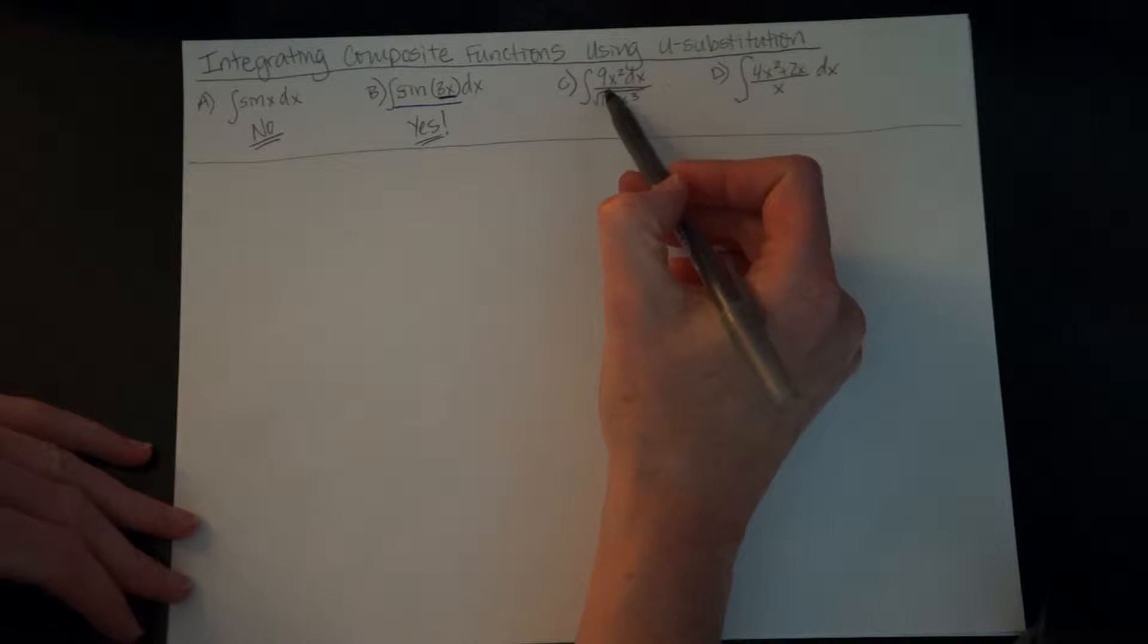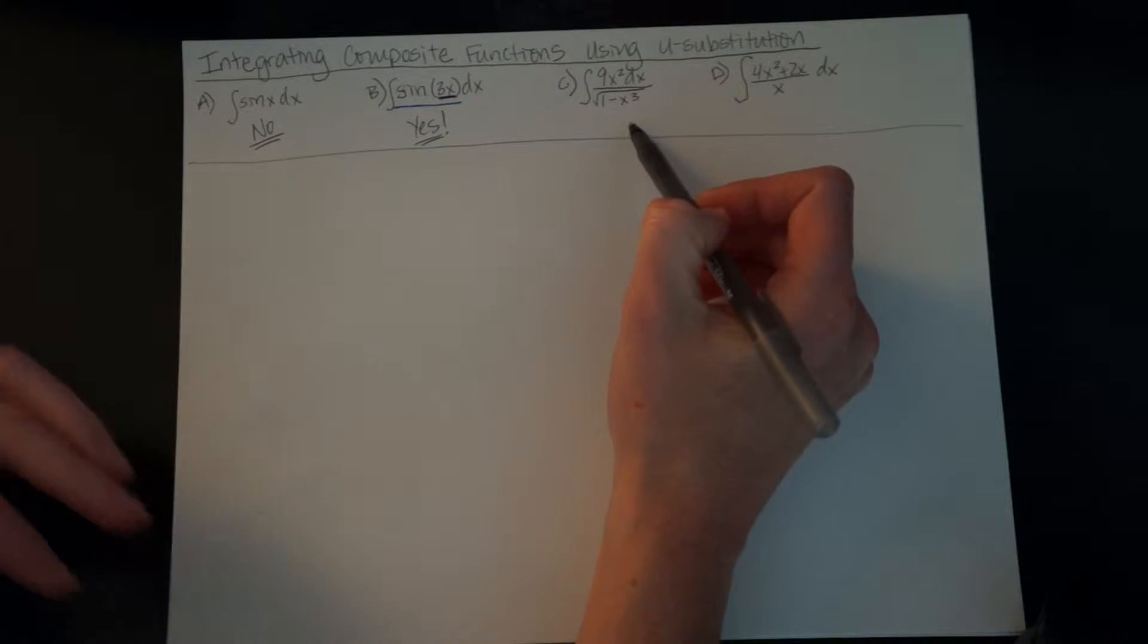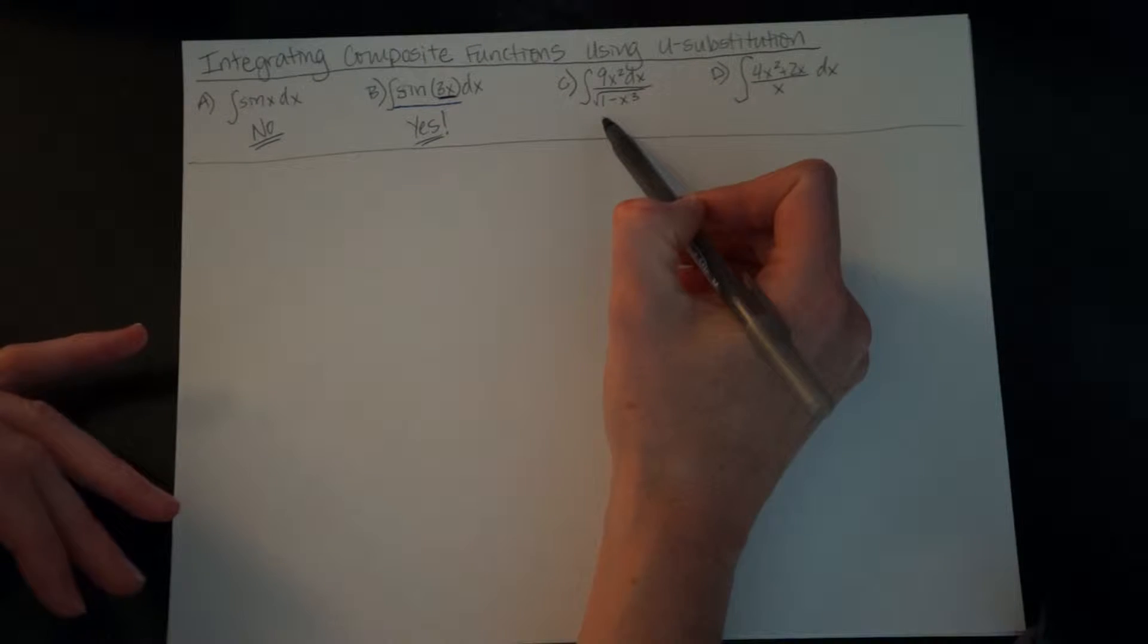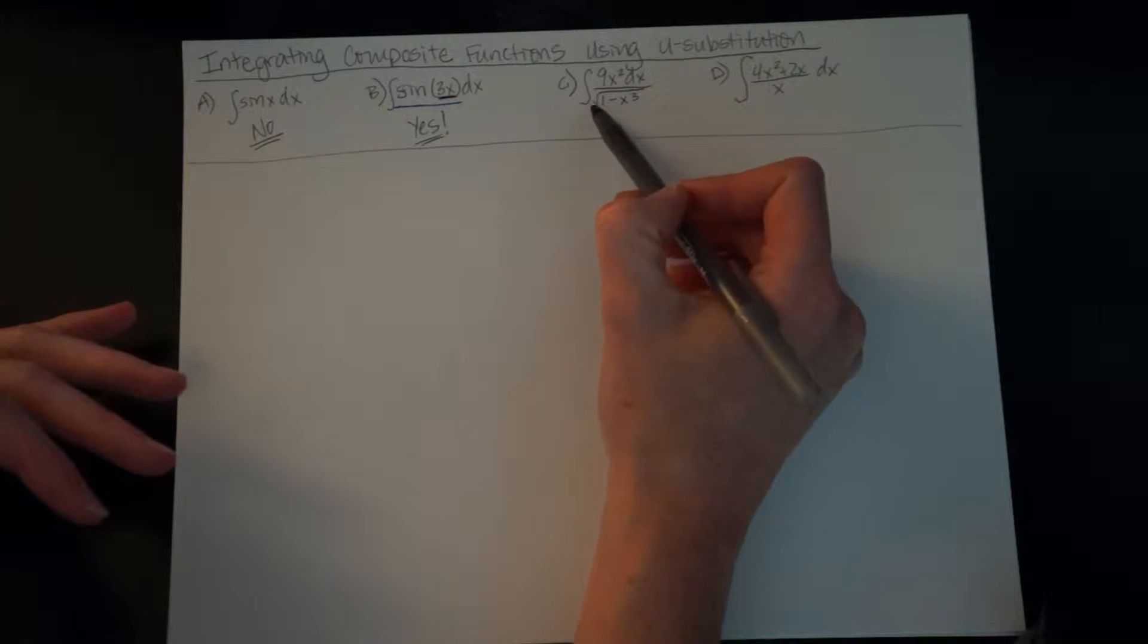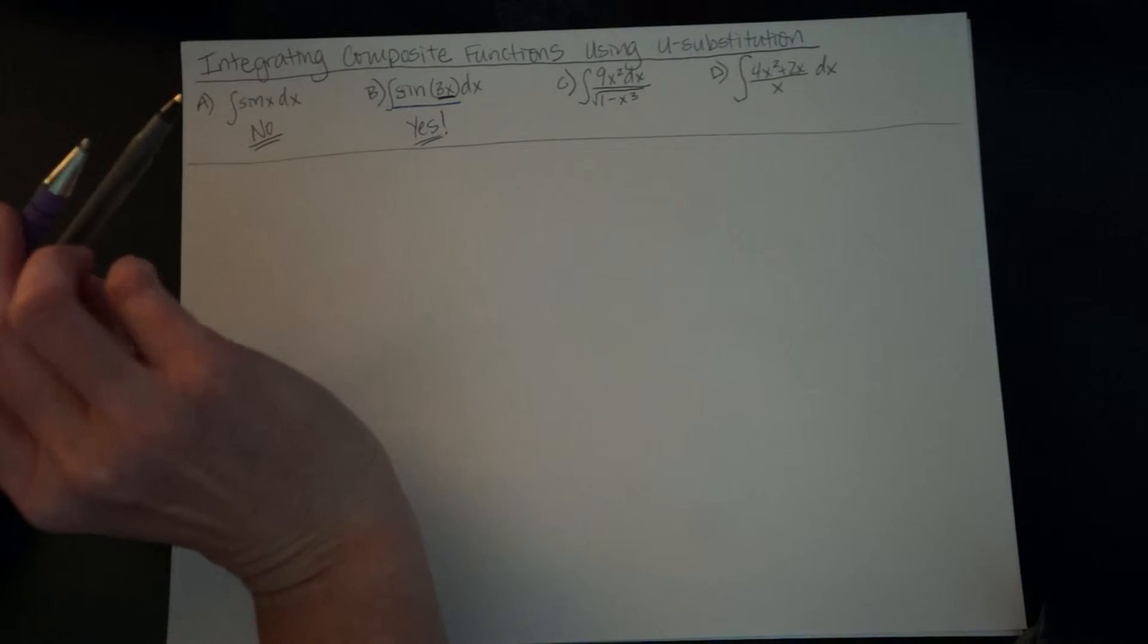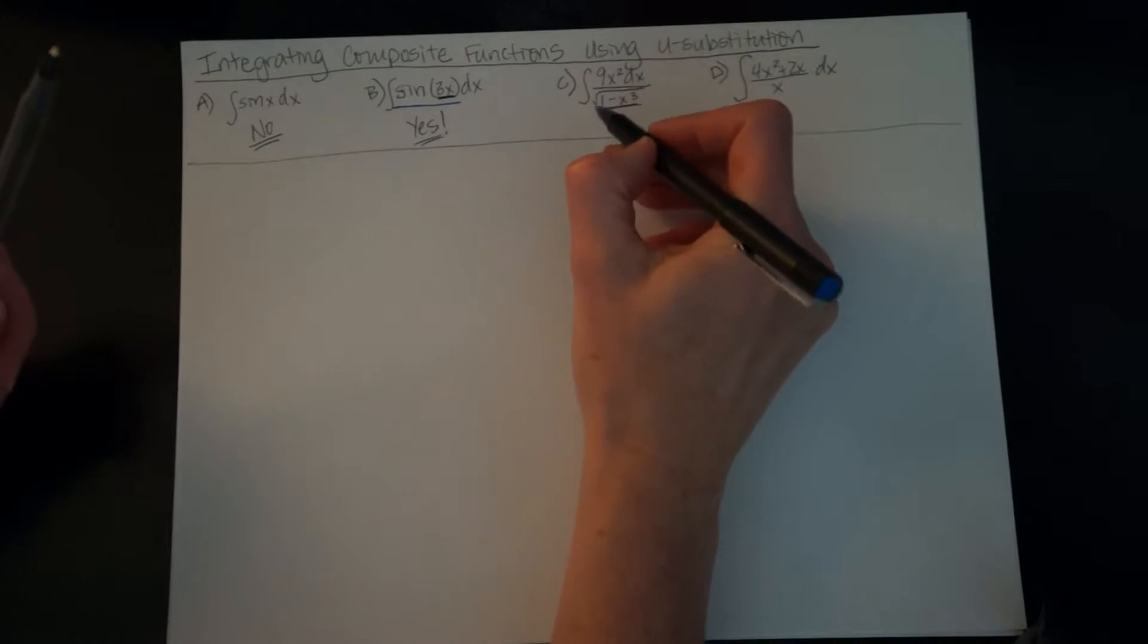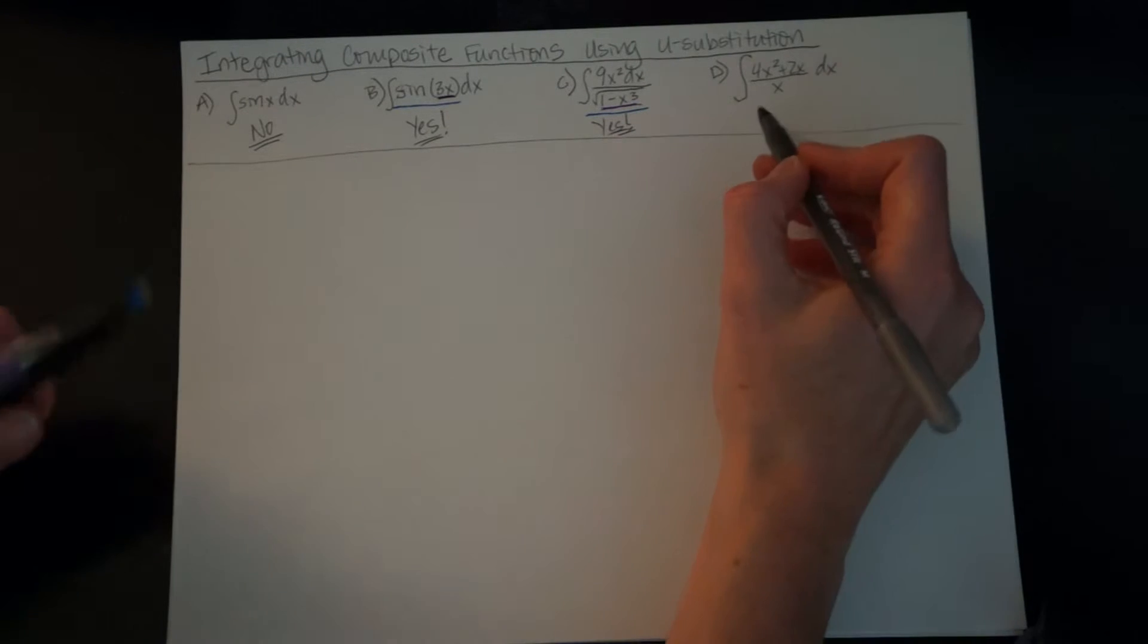This one over here, what a mess. 9x² dx all over the square root of 1 minus x³. Do you see a function within a function? This one's just 9x². This one here, the 1 minus x³, simple enough, but look that 1 minus x³ is within the square root function. So this one as well is a composite function. The 1 minus x³ is within the square root function. So there lies the composite. So that one's a yes too.